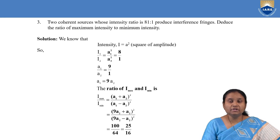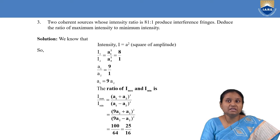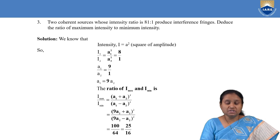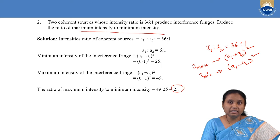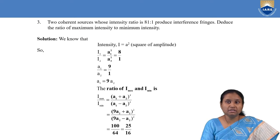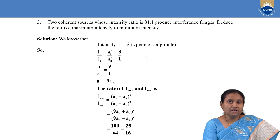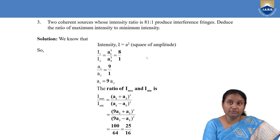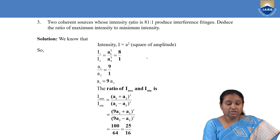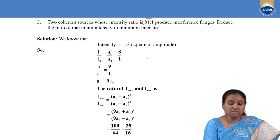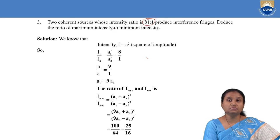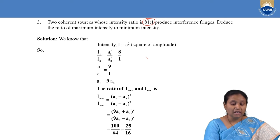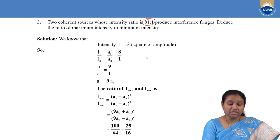In the next problem, here also we are given an intensity ratio, but the approach is different. In this case, we will try to express the amplitude of one wave in terms of the amplitude of another wave. We are given two coherent sources whose intensity ratio is 81 to 1, and these two intensities are producing interference fringes. Again, we need to find the ratio of maximum to minimum intensity.